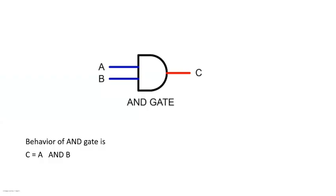If you take an AND gate, this is a simple structure — the symbol is looking like this. There are two inputs; this is a two-input AND gate with inputs A and B. There is one output. There are also more than two input AND gates, but we are taking a very basic component here — a two-input AND gate with one output.